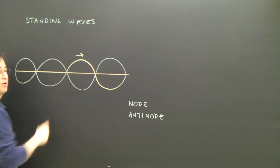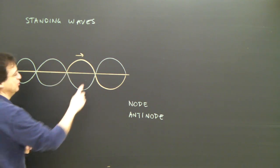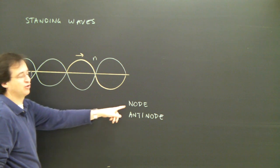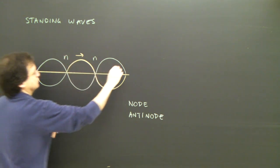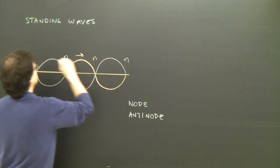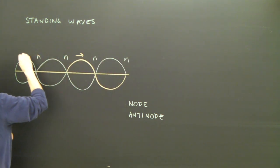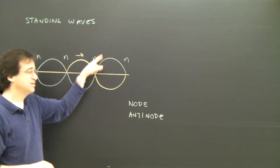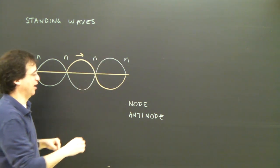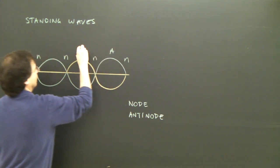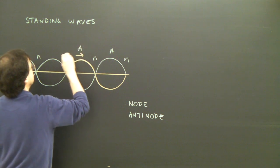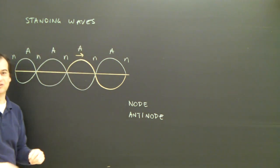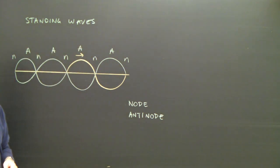Now we have some parts we need to label. The places where the string is not moving are called nodes. The part where the string is moving up and down rapidly is called an anti-node. So these are anti-nodes in that vibrating string.